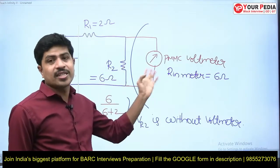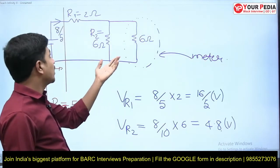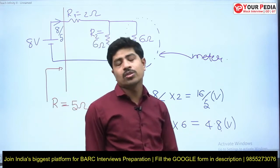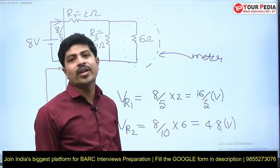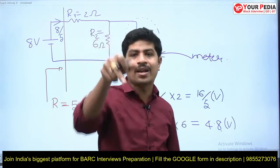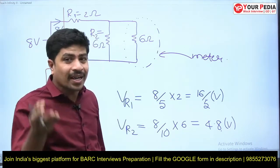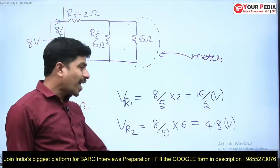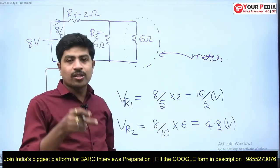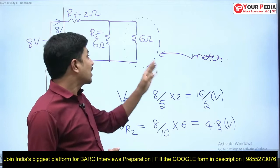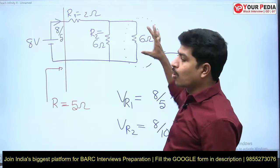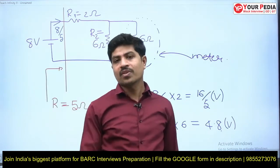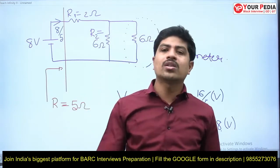This meter is also acting as a load and drawing some current because it has resistance (6Ω). 6 in parallel with 6 is 3, plus 2 is 5; current is 8/5 A, divided equally giving 8/10 A in R2, so V_R2 = 4.8 volts. Actual voltage should be 6 volts but we're getting 4.8 — there is an error. The meter's internal resistance is responsible for this wrong value. It is acting as an extra load, drawing current, and changing the original circuit condition.